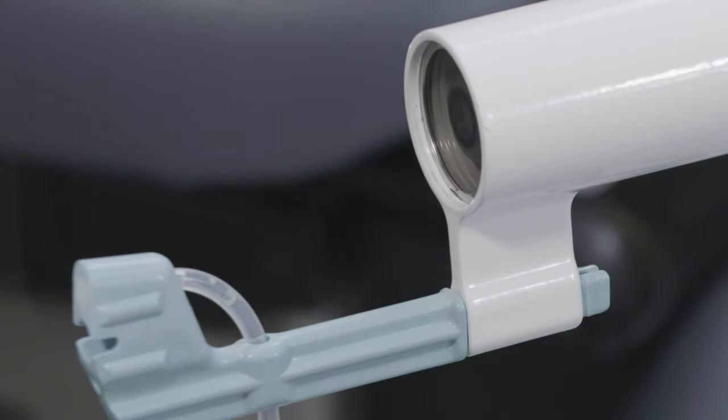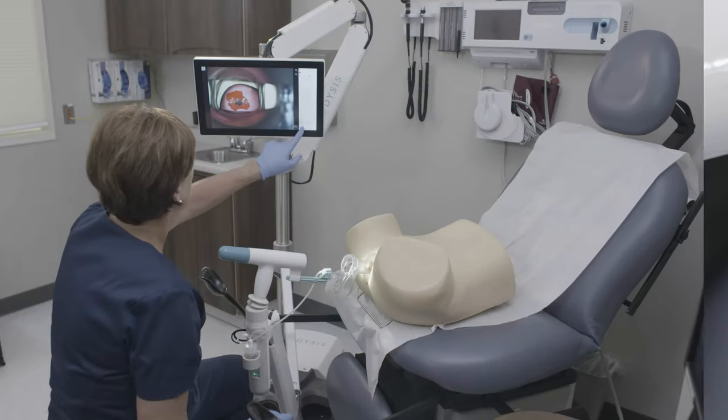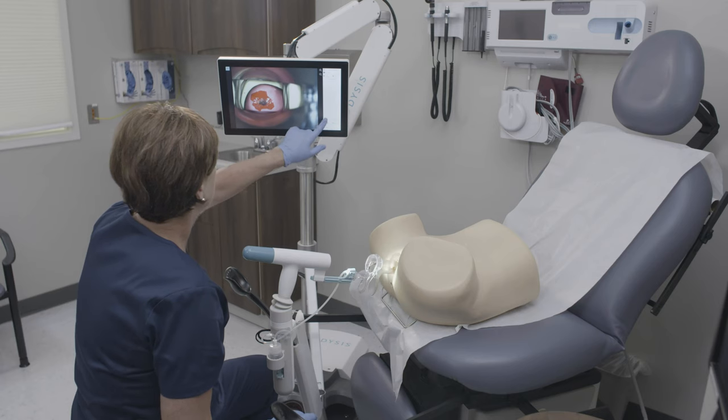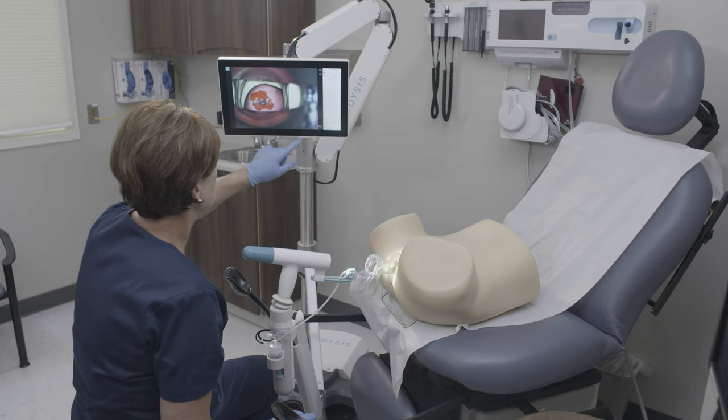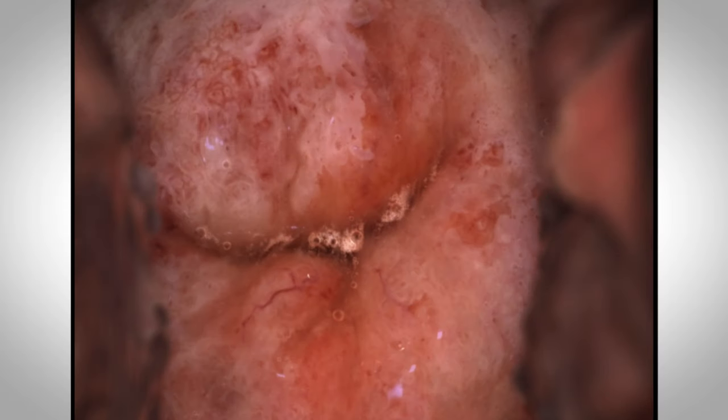The acetic acid is automatically applied for homogeneous coverage over the cervix and the imaging starts automatically. A standard visual colposcopy can now be performed. In the background, Dysys is timing and measuring the acetyl whitening reaction.